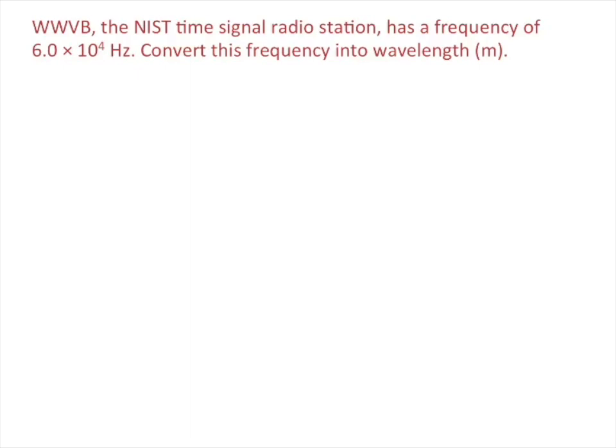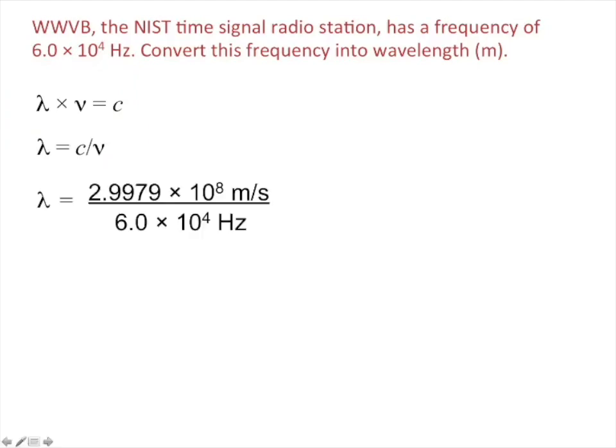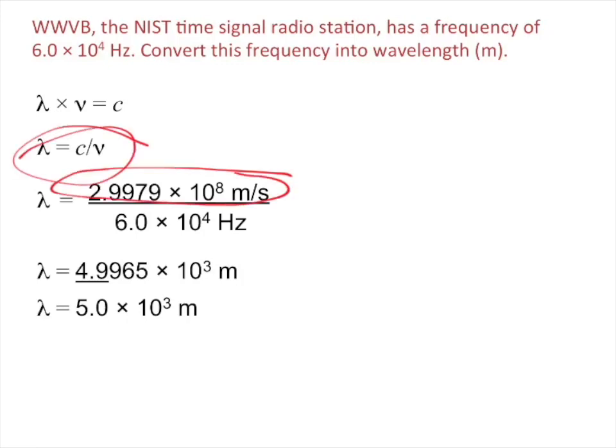So the National Institute of Standards and Technology, I think that's what NIST stands for. They have a time signal radio station in Colorado that says the current time is da-da-da-da-da-boop. It's at a frequency, a pretty low frequency for a radio station. It's at 6.0 times 10 to the fourth hertz. What wavelength is this frequency? So how would you do that? Here's the equations you have. This one is the one you typically have on the test. Lambda equals the speed of light divided by the frequency. Or maybe you'll have the other version. It's pretty easy to convert from one to the other. So you take this equation. Lambda equals c over nu. And you put the speed of light here. That's c. You put nu down here, which is the frequency. And then you do the math. And then you have two sig figs because you're given 6.0 times 10 to the fourth hertz. And there you go. You get your wavelength in meters. On a test, you'll be given the formula and you'll also be given the speed of light. So you don't have to worry about memorizing those things.